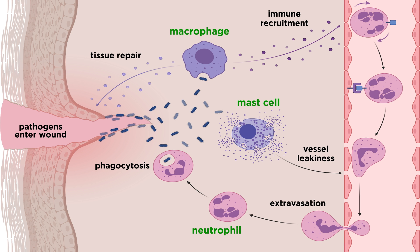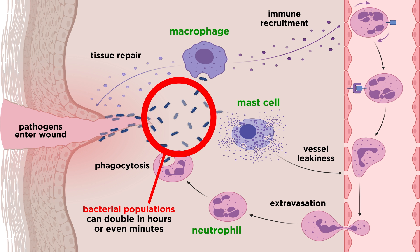Continuing our investigation of the innate immune system, one of the most important factors to consider during an immune response is how quickly host cells can respond to an infectious threat. Bacterial doubling times can range from the order of hours to minutes, meaning that they can rapidly overtake host tissues if they aren't contained quickly enough.